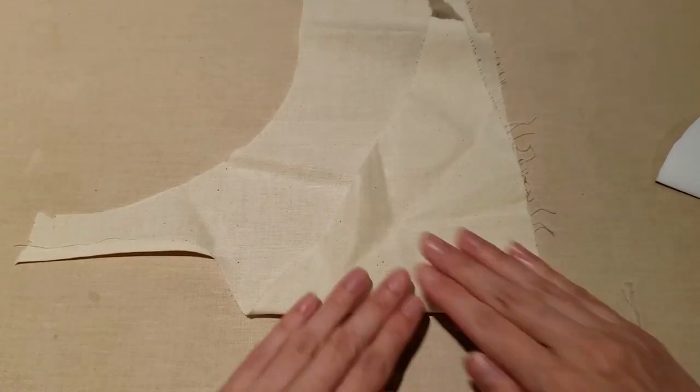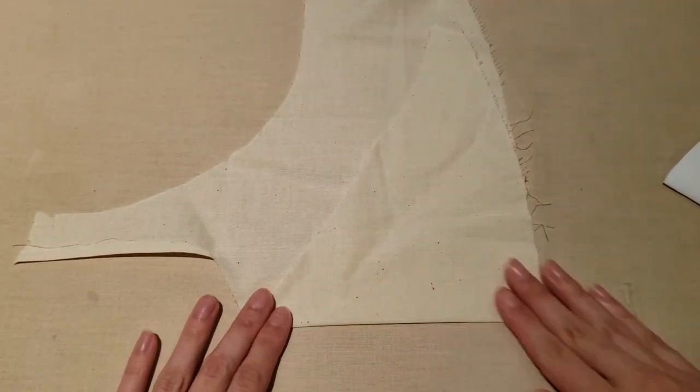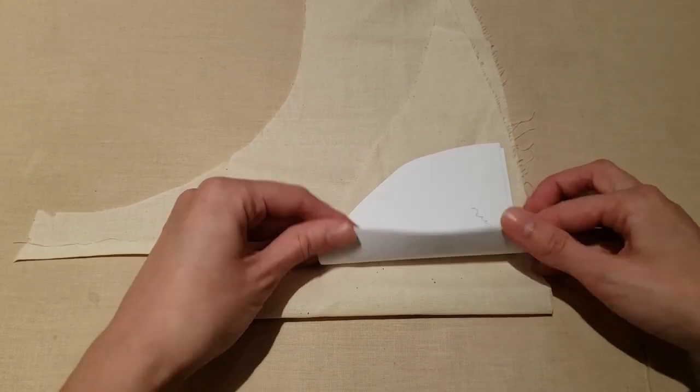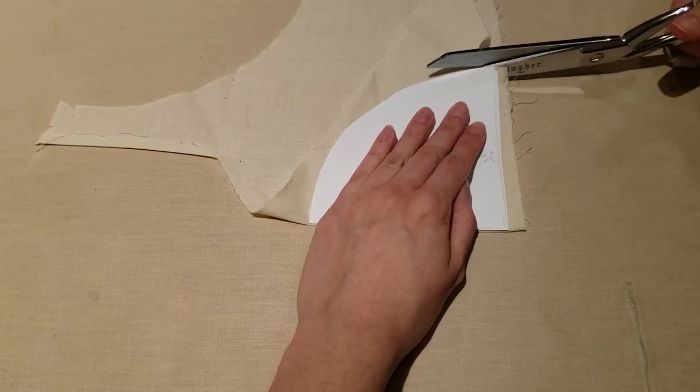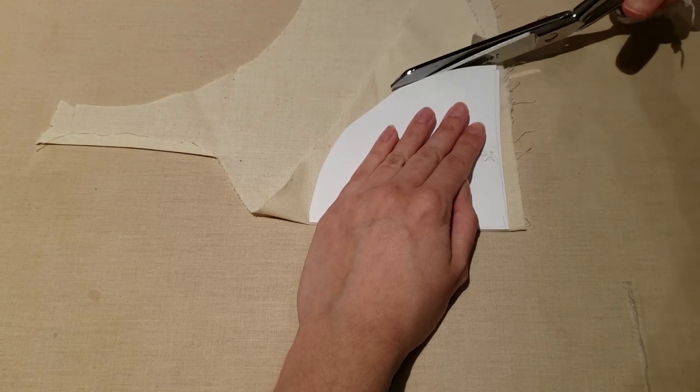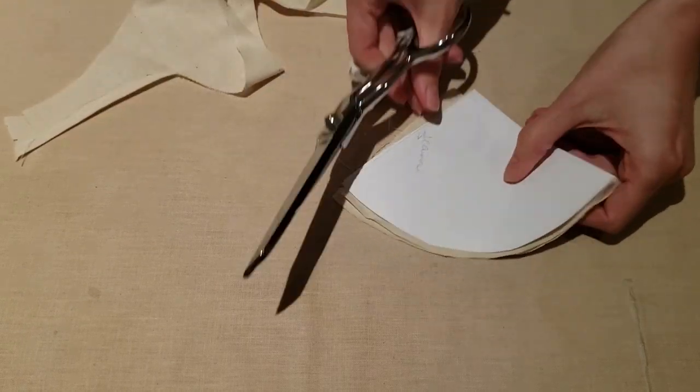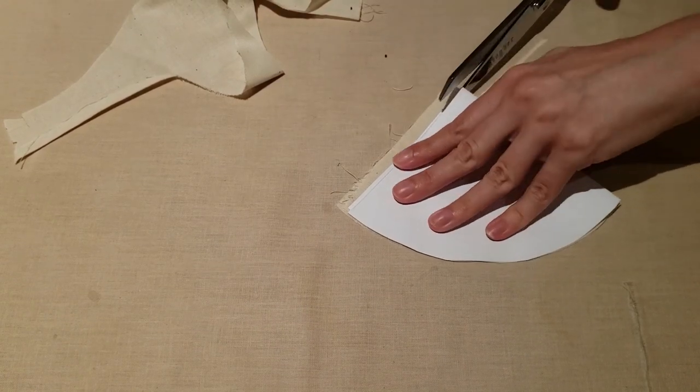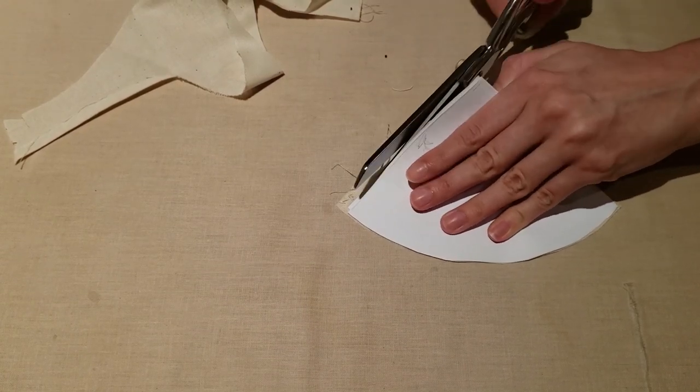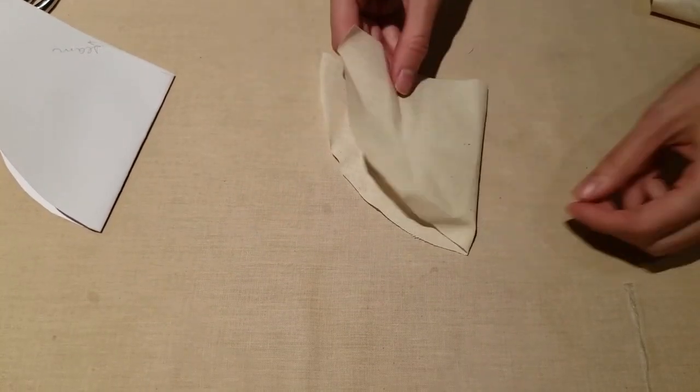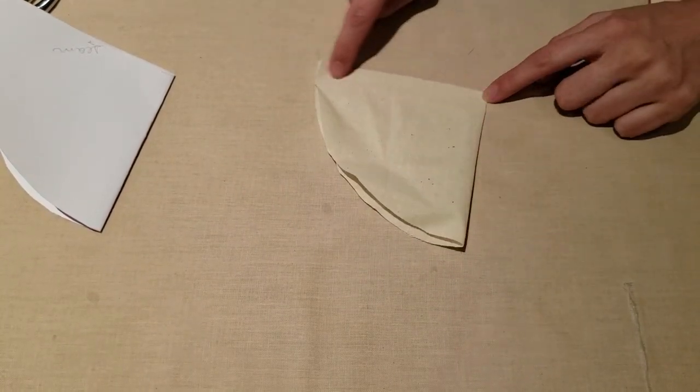Fold your fabric in half and place your template on top of the fabric, lining up the fold line on the template with the fold of the fabric. Then, cut out your fabric around the template. And there you have the base for your fabric filter. All that's left to do is stitch up the seam.